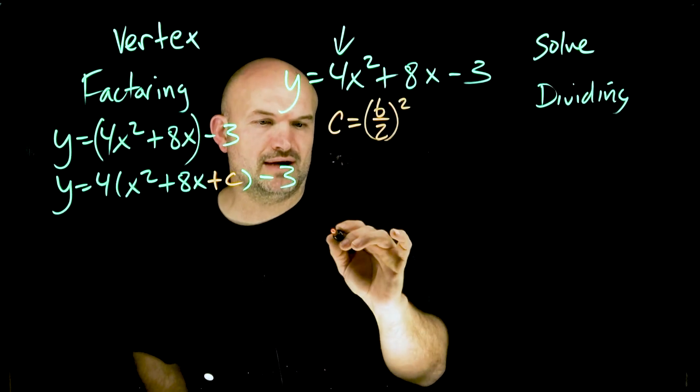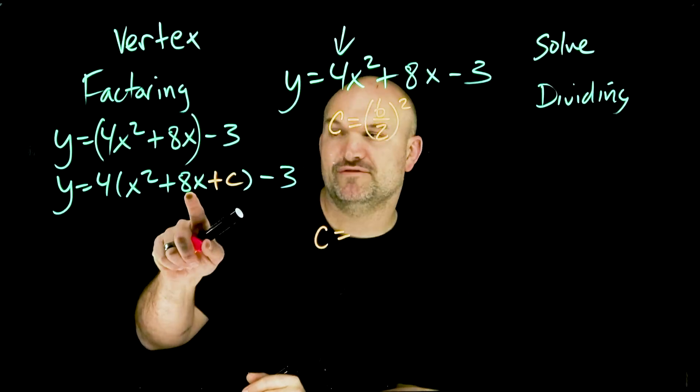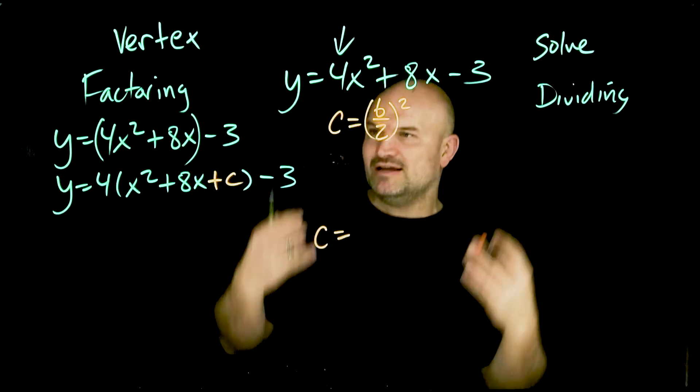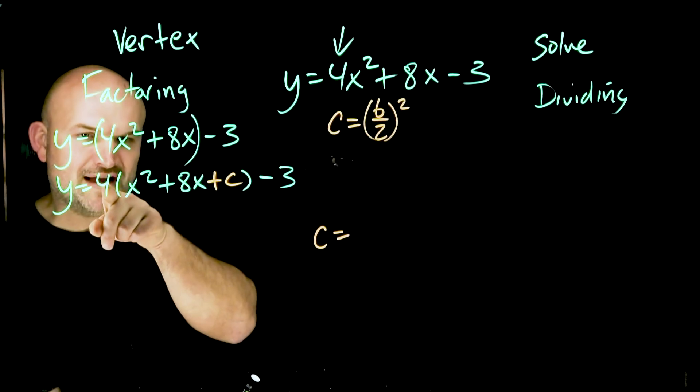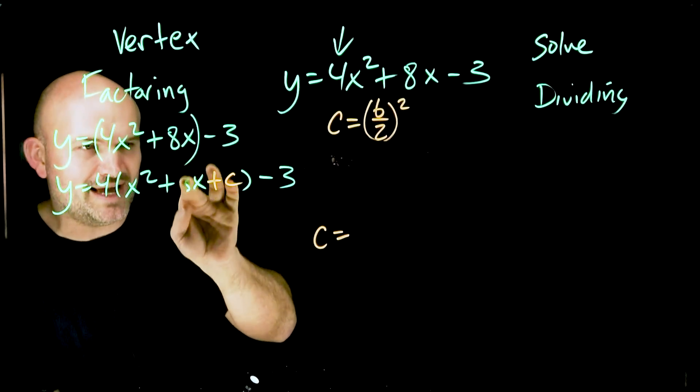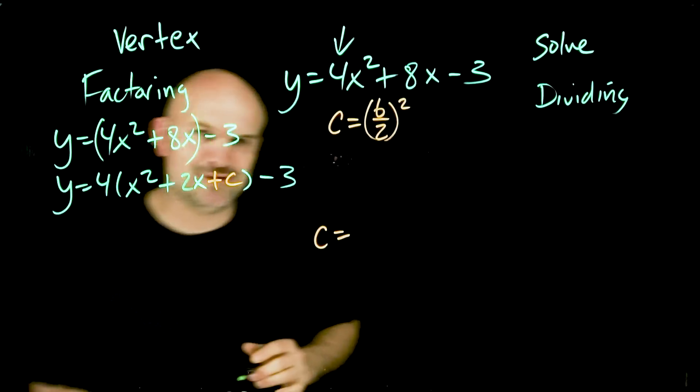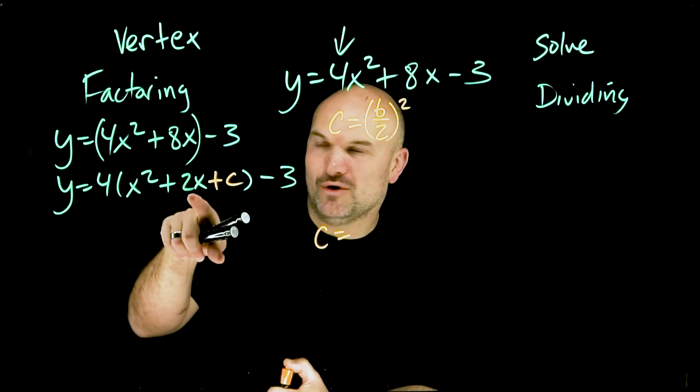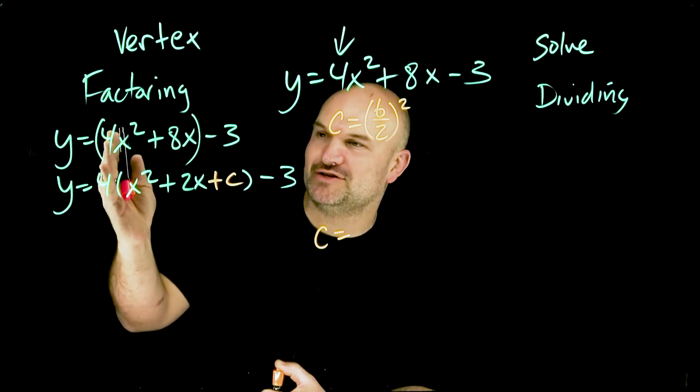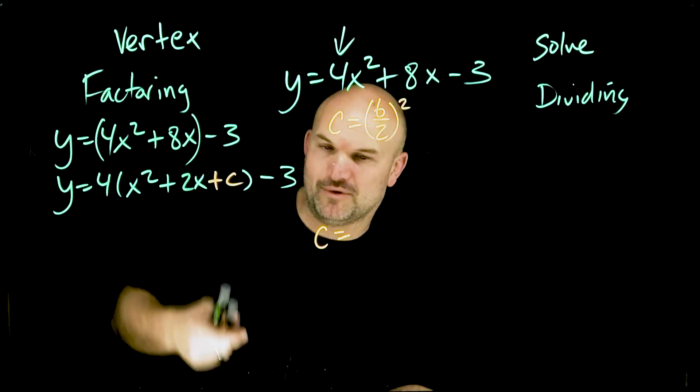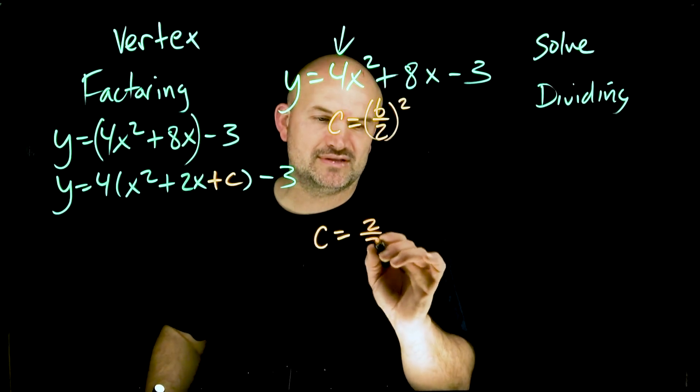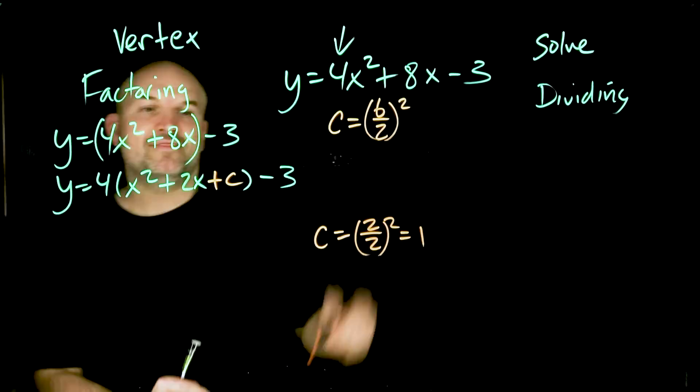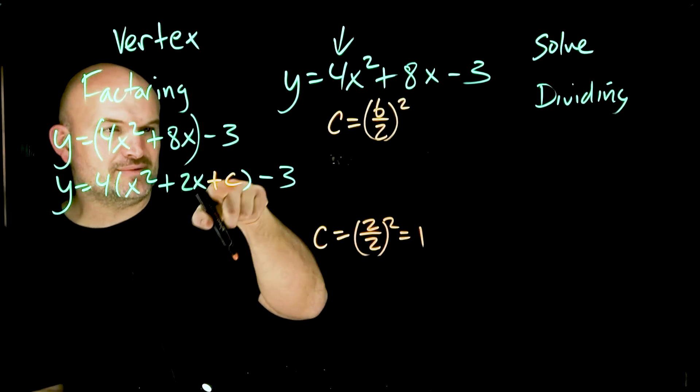So in this example, my b is the coefficient of my linear term inside of this already factored out and I already made the mistake again. Ladies and gentlemen, when you're factoring out the four, factor out the four from here as well as from here. Be careful. Thank you if you already caught that. Yeah, it's going to be the coefficient of my linear term after you factored out the four. You got to factor out that four.